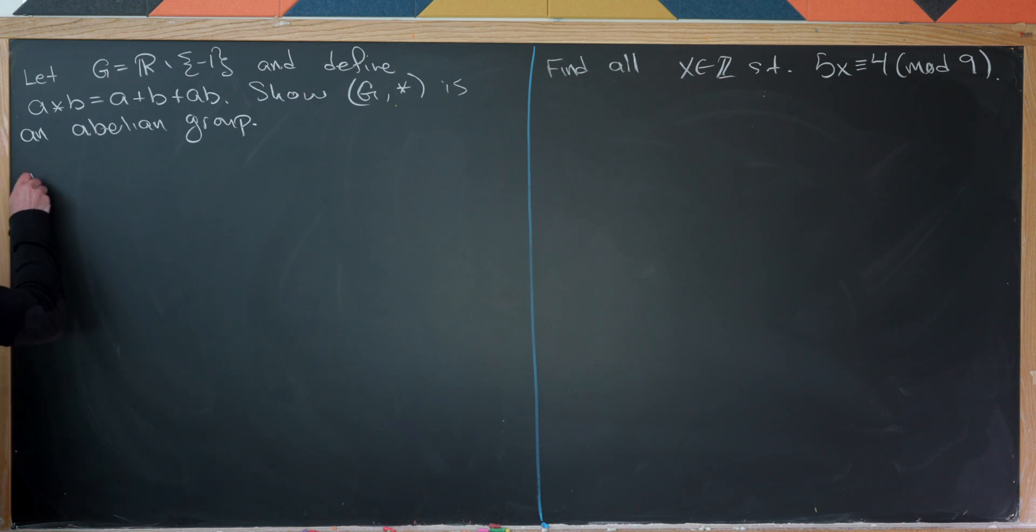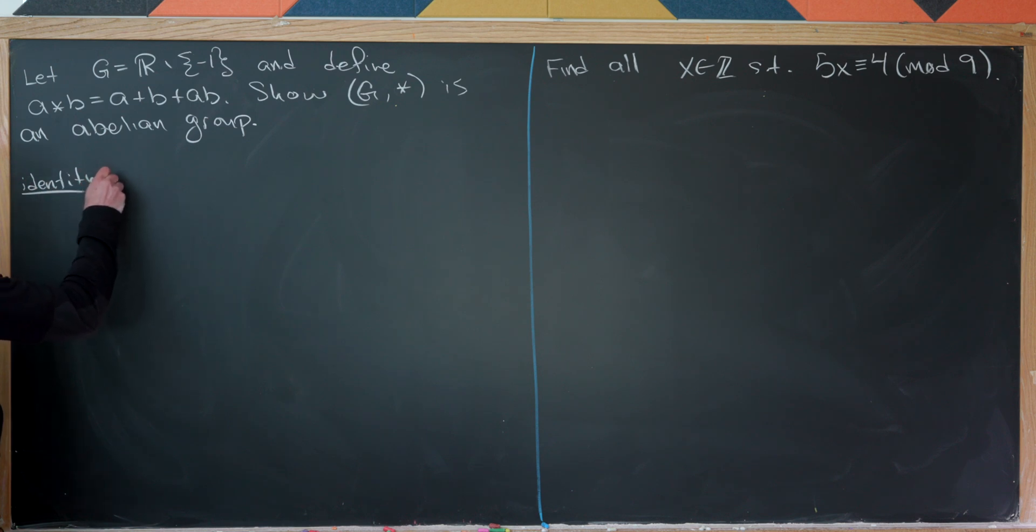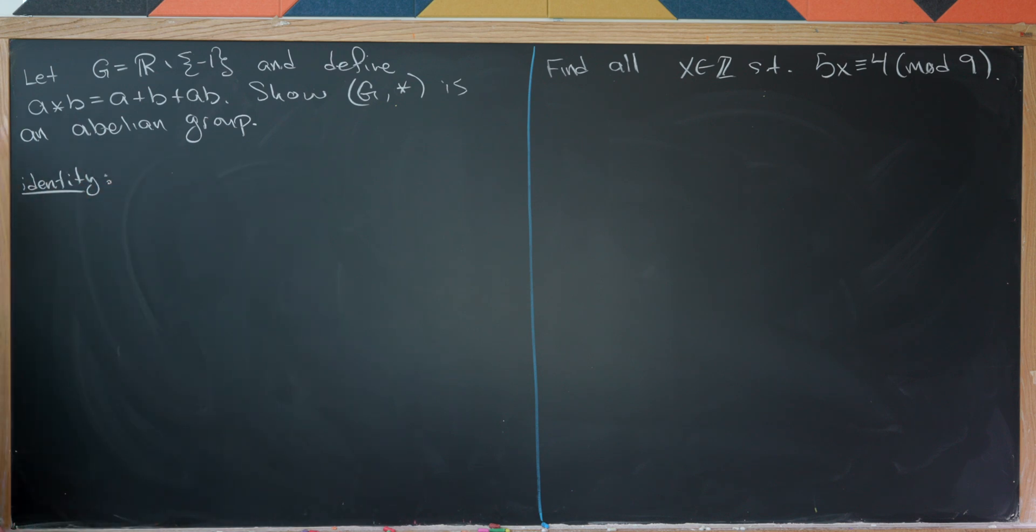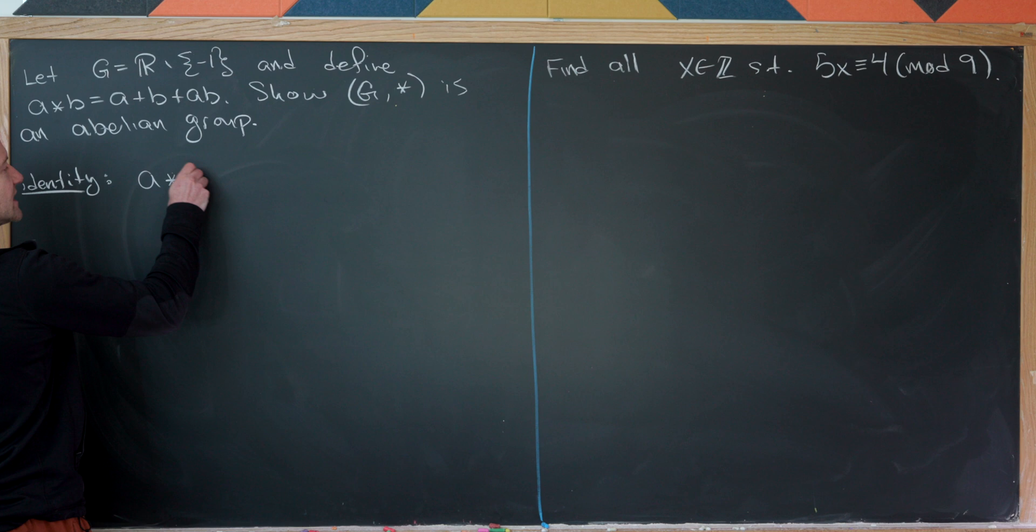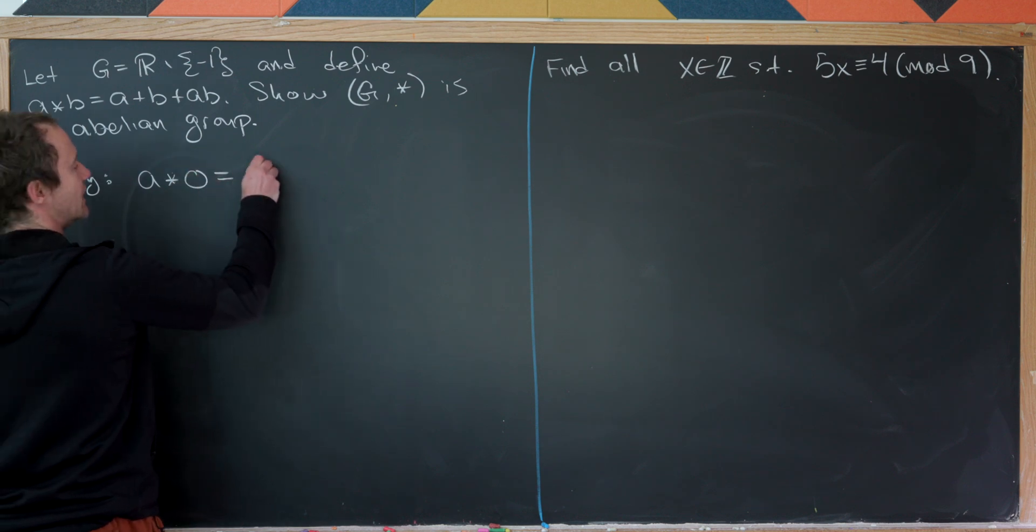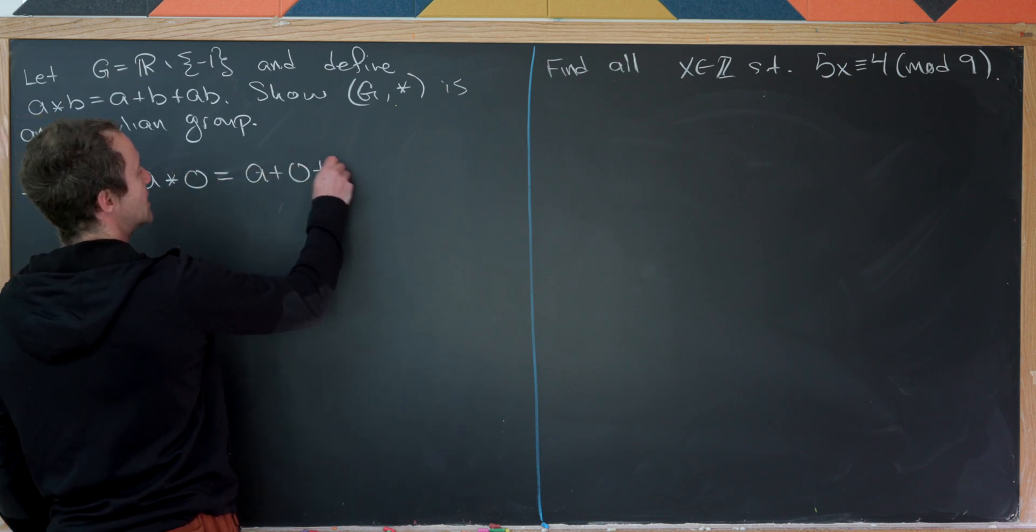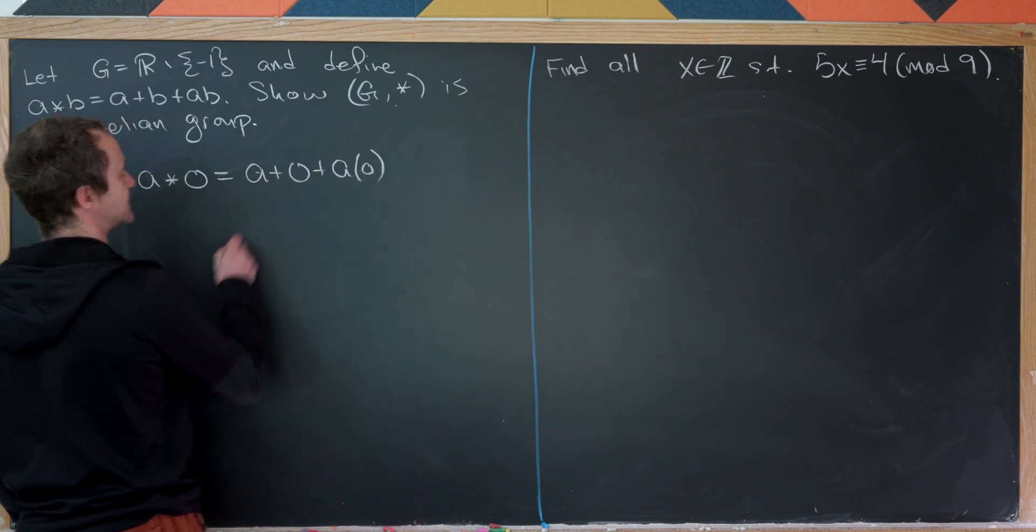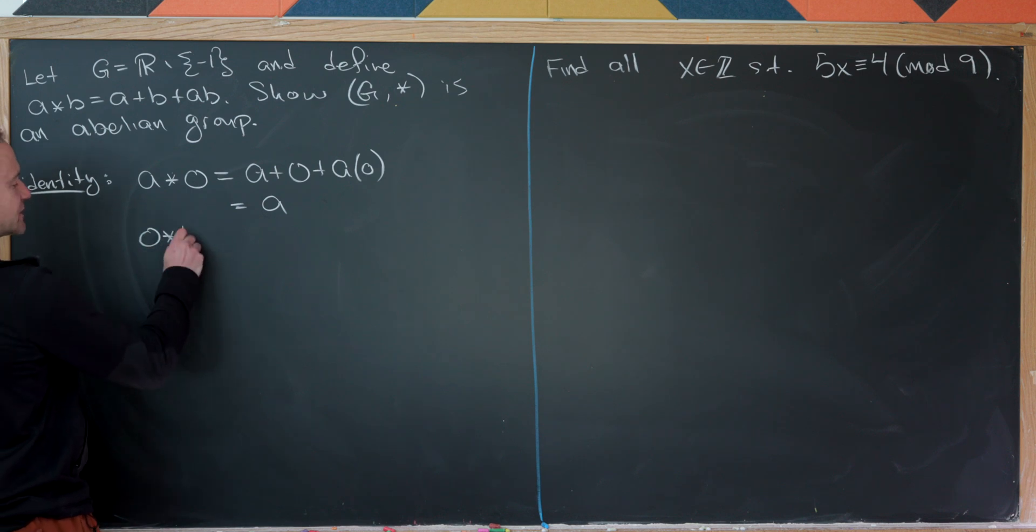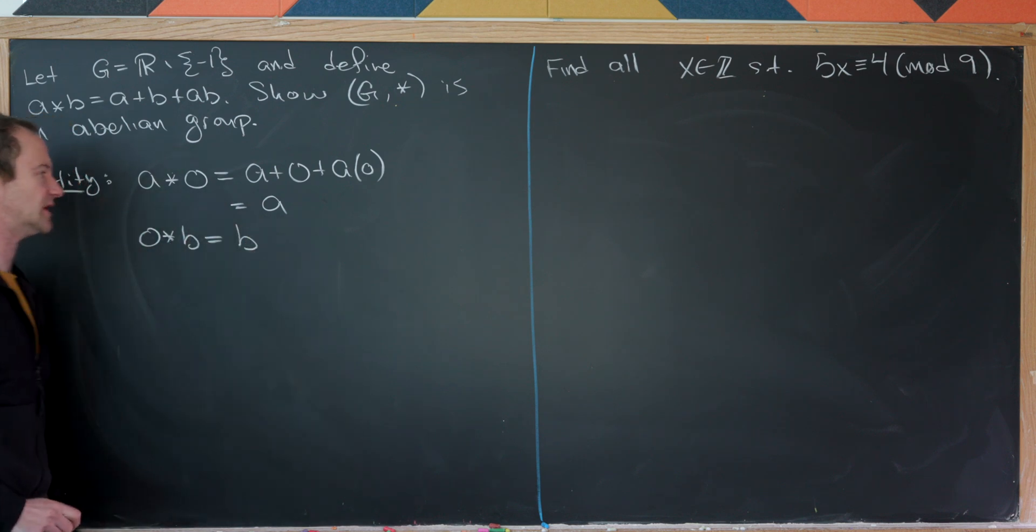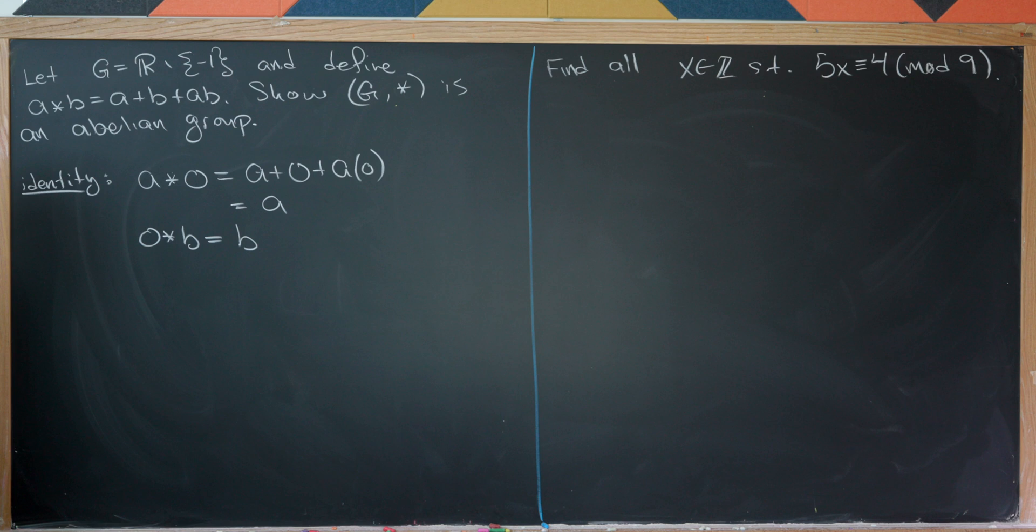So recall that we have a few things to prove. We need to prove that there is in fact an identity. I think the easiest way to get this identity is really just to look at this and guess the identity. So let's notice that a star 0 is equal to a plus 0 plus a times 0, but that's clearly equal to a. And then similarly, 0 star b will be equal to b. But that's exactly what we need in order to have an identity.